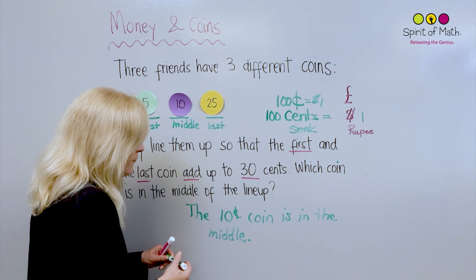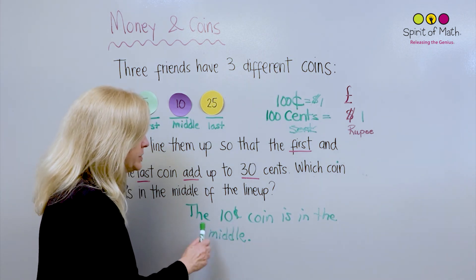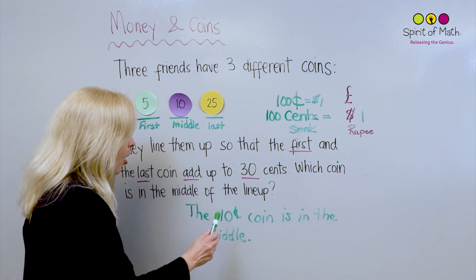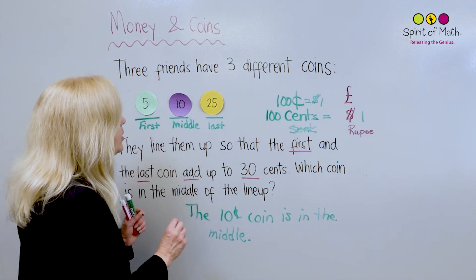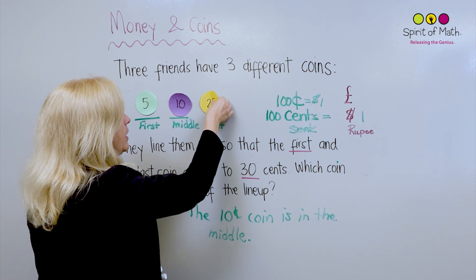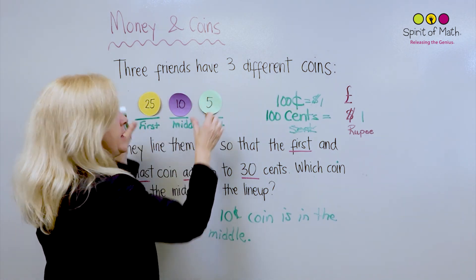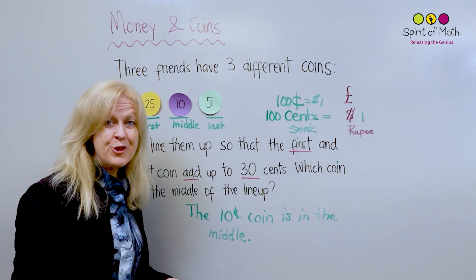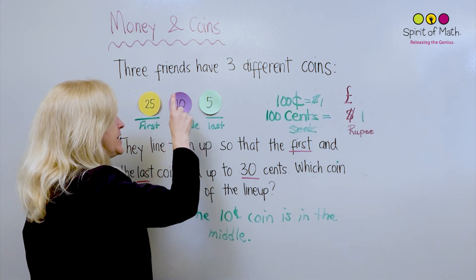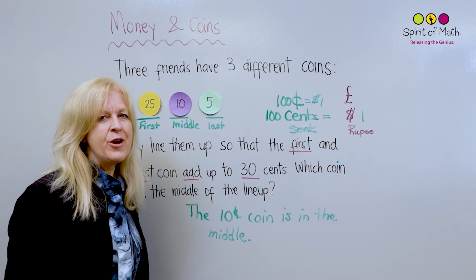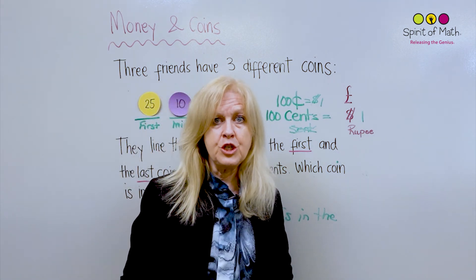Notice how I've written the cent sign here, and I've also got the 10 with the cent symbol afterwards. I've written a complete sentence answer — all the words are in here except for this symbol, the cent symbol. Now you may have done this in a different lineup — you may have done 25 first and five at the end — that also works. It doesn't matter which order those two are; all that mattered was that the 10 is in the middle, and that's what you wanted as your answer.